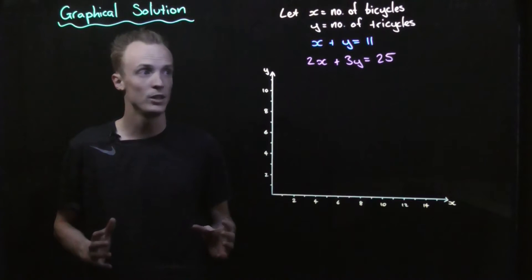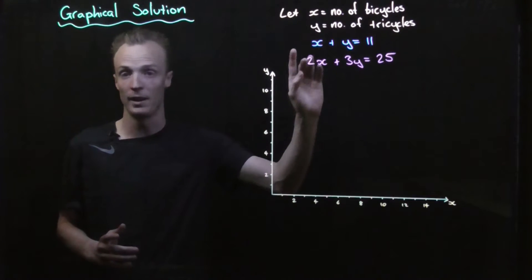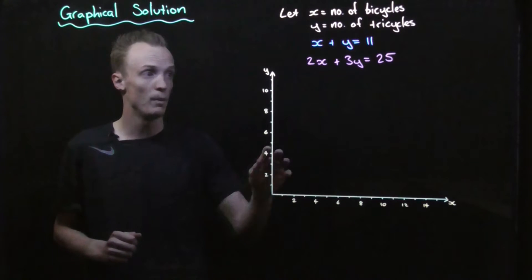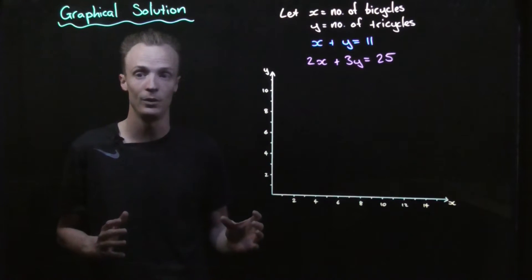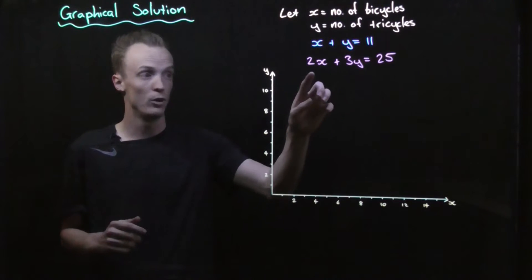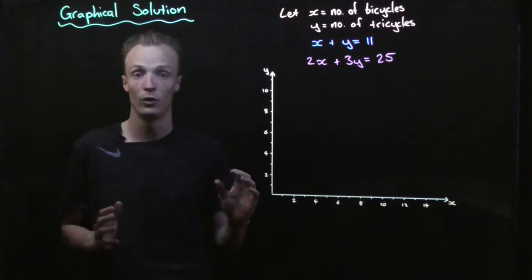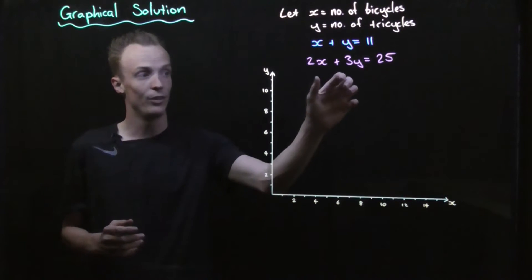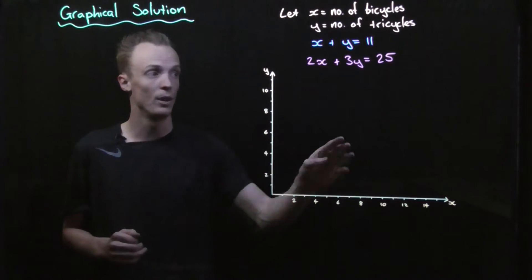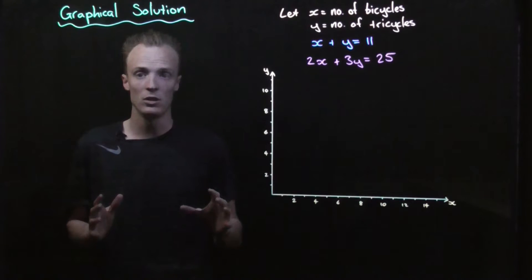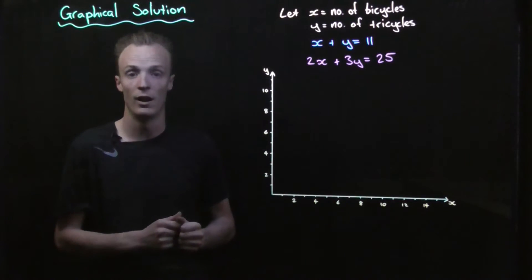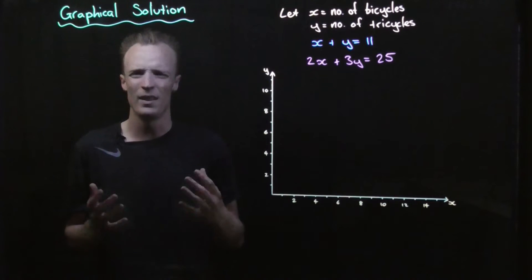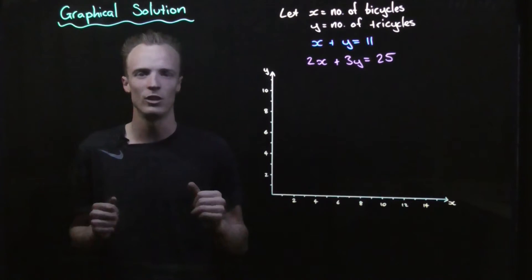Here we've got our two equations: x representing the number of bicycles and y representing the number of tricycles. The first equation — adding them together — represents the total number of cycles. The second equation multiplies the number of bicycles by 2 and the tricycles by 3, and when added together gives the total number of wheels. I'm going to graph these two lines onto the same set of axes and then investigate what that actually shows.